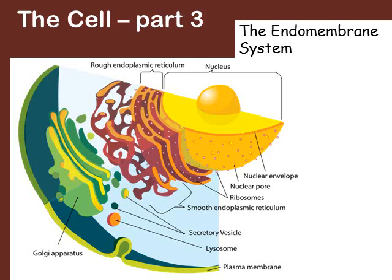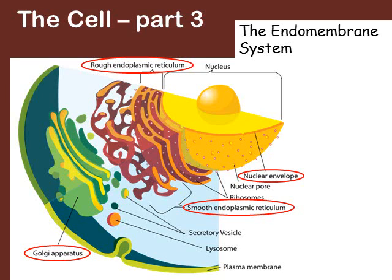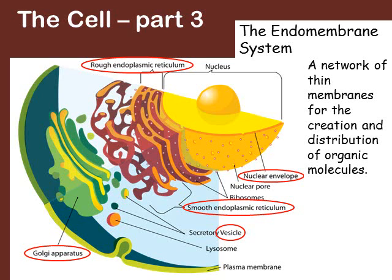Extending from the nuclear envelope is a series of organelles referred to as the endomembrane system. The endomembrane system is made up of the nuclear envelope, both the rough and the smooth endoplasmic reticulum, the Golgi apparatus, and small transport vesicles that move between the different organelles. The endomembrane system itself is this thin network of membranes that are responsible for creating and directing where new molecules are supposed to go in the cell.